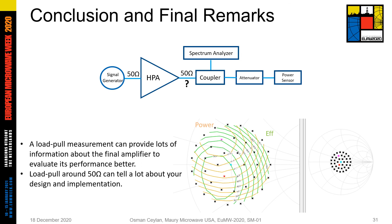Maybe for narrowband applications, it's not a big problem. Modern wireless communication signals have complex and wideband modulations. Therefore, assuming that you have a wideband 50-ohm setup is the first mistake in your measurement. A mixed signal active load pull setup can do it. I wish you oscillation-free, reliable, and accurate measurements. Thanks for your attention.